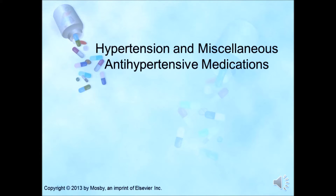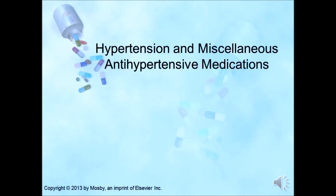In this section, we're going to start talking about hypertension and the miscellaneous antihypertensive medications. The drugs most commonly used for hypertension are diuretics, beta blockers, calcium channel blockers, ACE inhibitors, and angiotensin 2 receptor blockers, the ARBs.